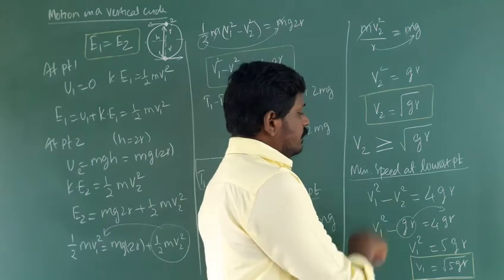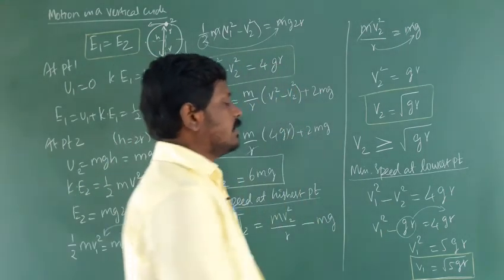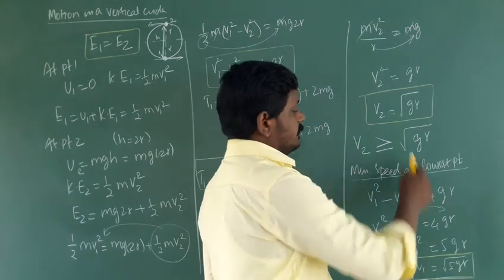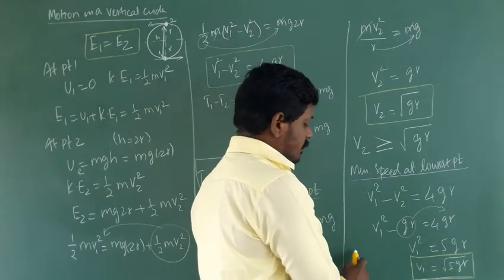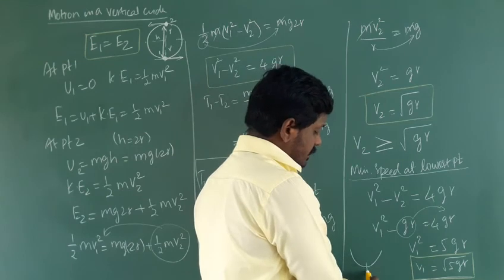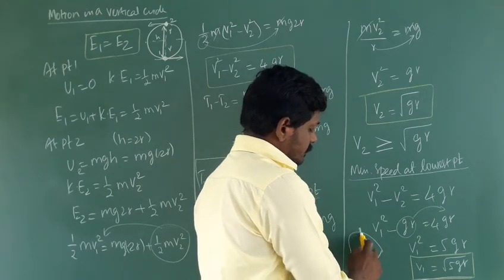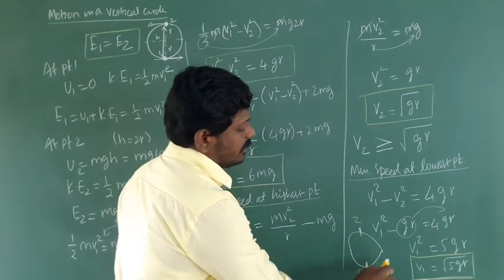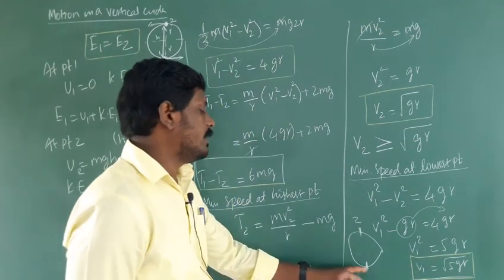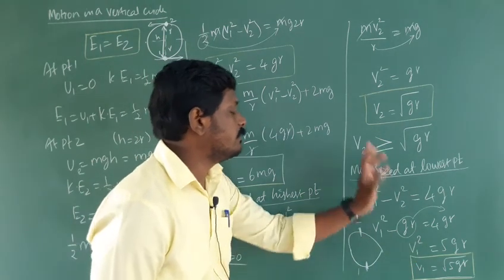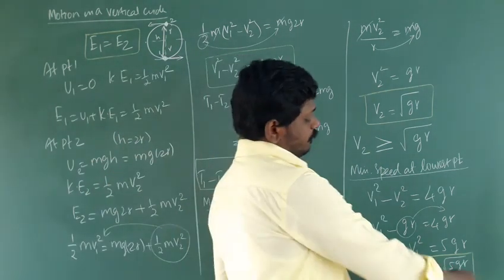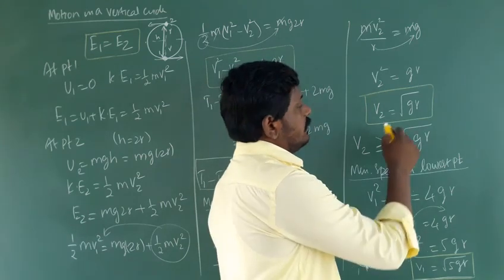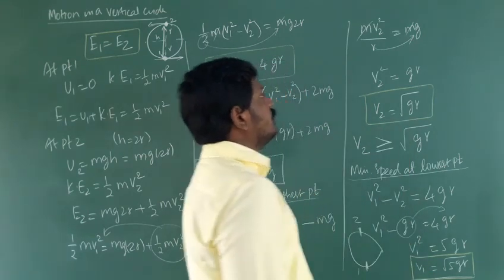Comparing the velocities: the velocity at the lowest point V1 equals square root of 5gr, and the velocity at the highest point V2 equals square root of gr. So the velocity at the lowest point is square root of 5 times the velocity at the highest point — the lowest point speed is greater. This may be asked in 5-mark or 1-mark questions: what is the minimum velocity at the lowest point, at the highest point, and which is greater.